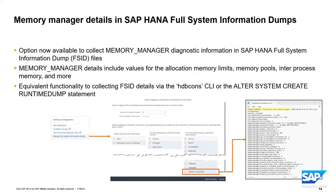When creating full HANA full system information dumps, a new option is available to collect memory manager diagnostic information when collecting the FSID files. This section includes values for things like the memory allocation limit, memory pools, inter-process memory, and more. This is equivalent to functionality available via the hdbcons command line utility or the ALTER SYSTEM CREATE RUNTIME DUMPS SQL statement. You can now do this in the HANA cockpit as well by selecting the memory manager option when creating your FSID.